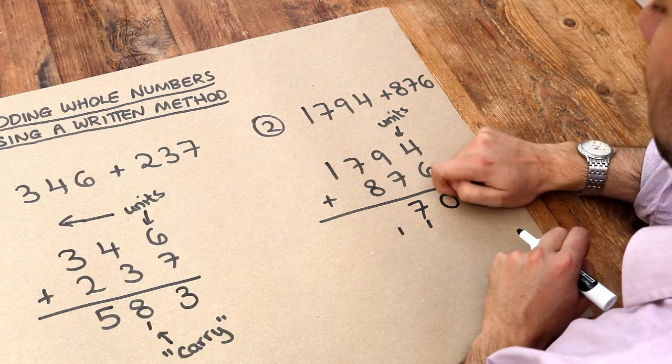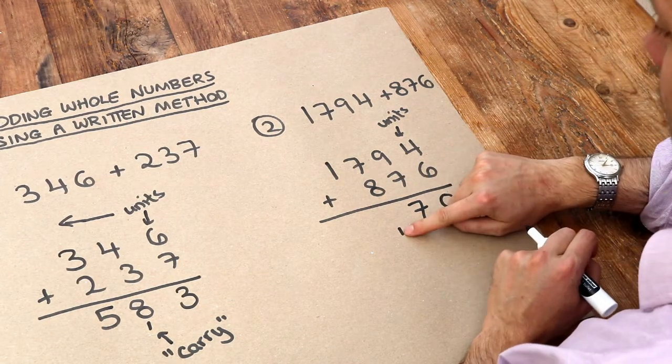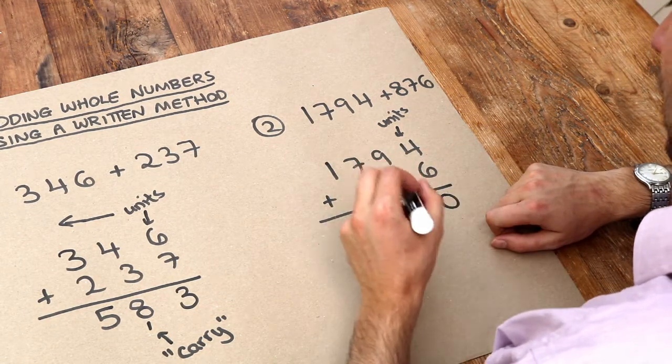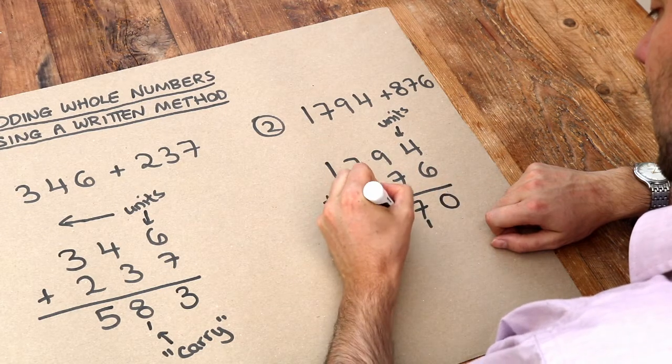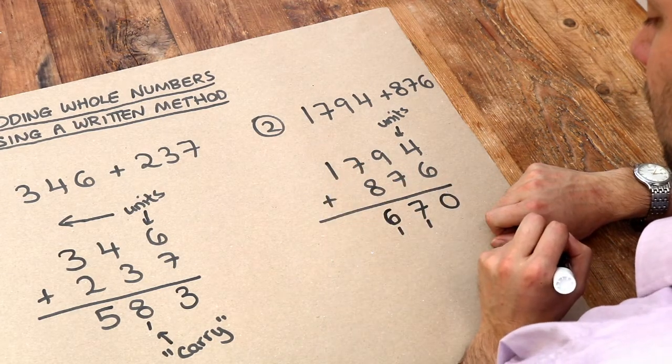7 plus 8 is 15, plus that carry of 1 is 16. So we put the units digit in 16 here, and put the tens digit of 16 here.